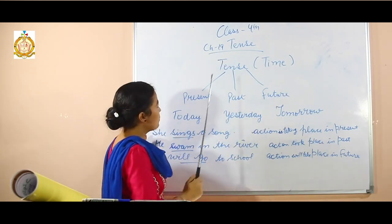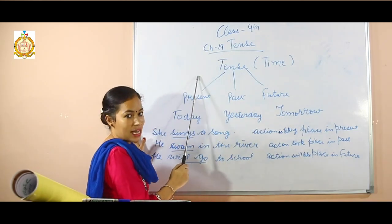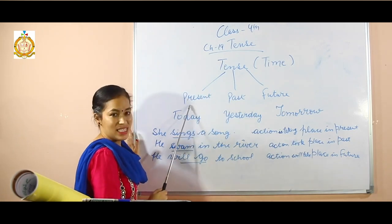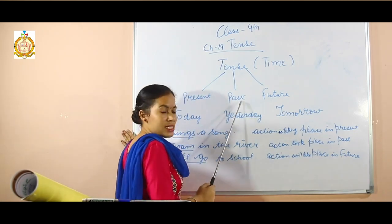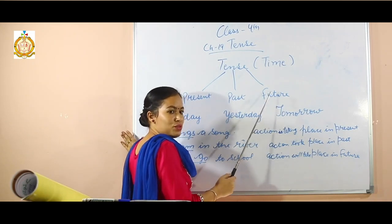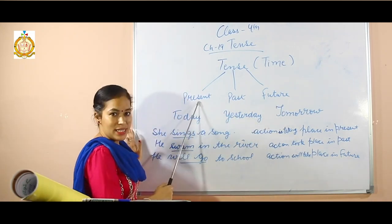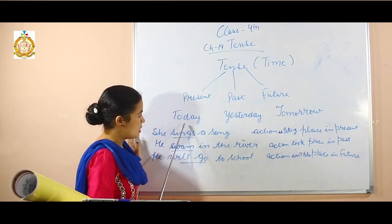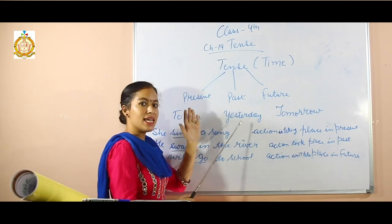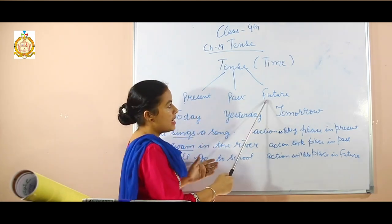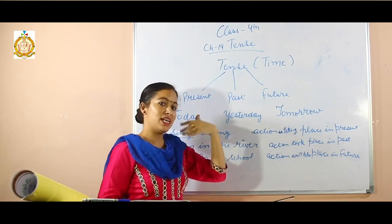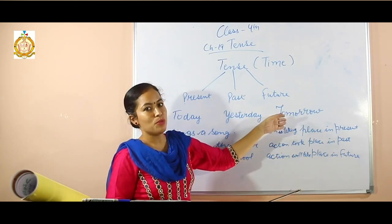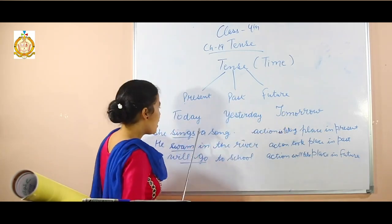There are three types of time, or tense. First is present, second is past, and the third one is future. Present is today — are you getting my point? Present is today, past is yesterday, and future is tomorrow. Tomorrow will come, so tomorrow is our future.